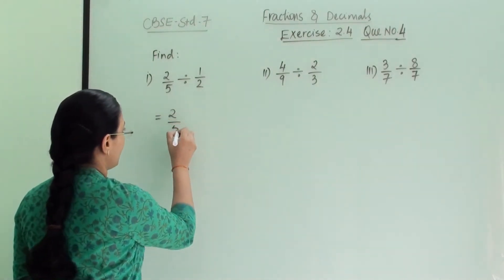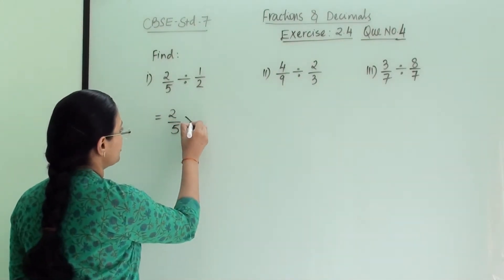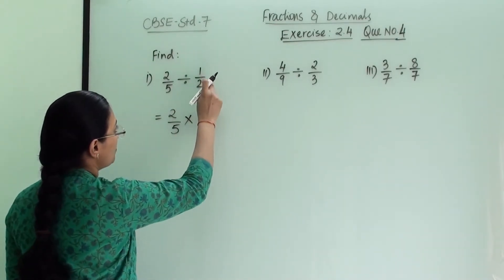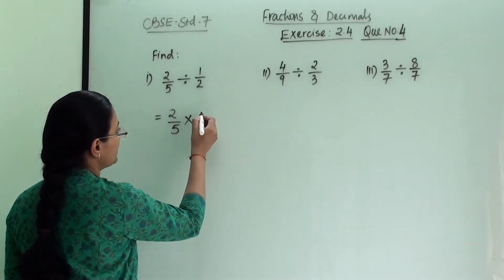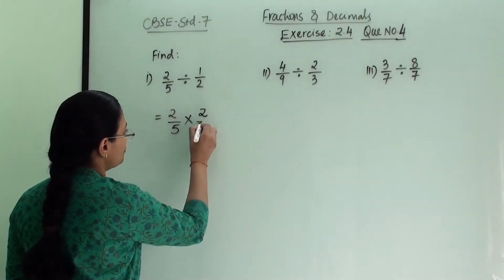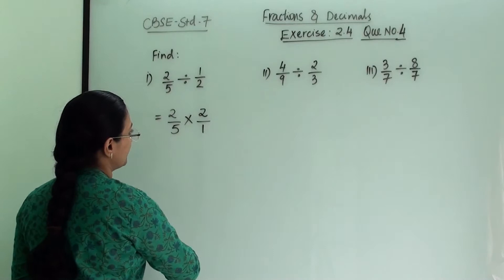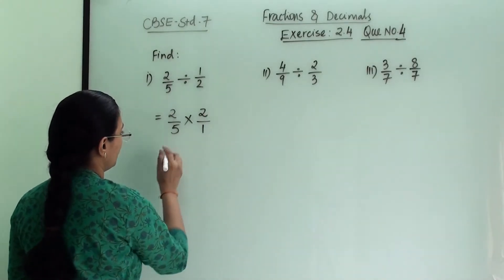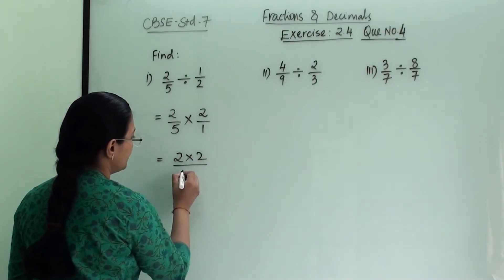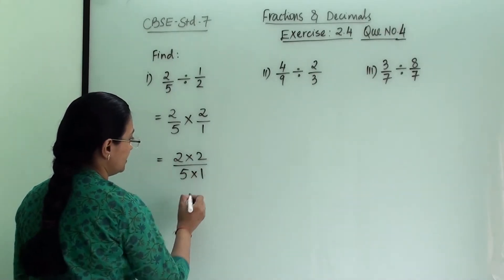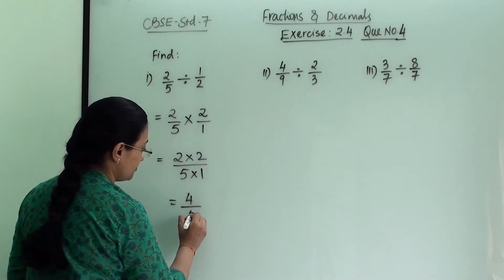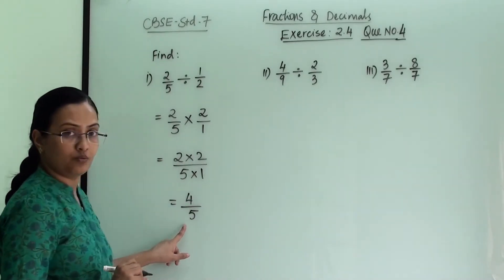So we write 2 by 5, then convert the division sign into multiplication, and write the reciprocal of 1 by 2, which is 2 by 1 — a whole number. Now multiplication gives us 2 into 2 divided by 5 into 1. We cannot reduce anything here, so the answer is 4 by 5, which is a proper fraction.